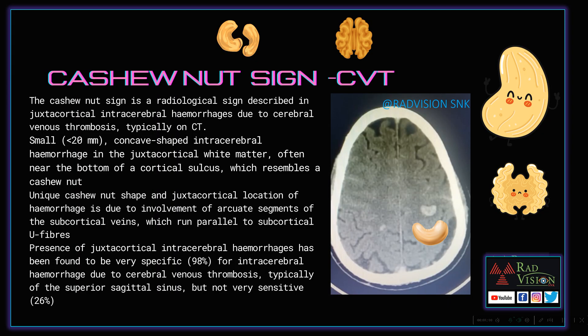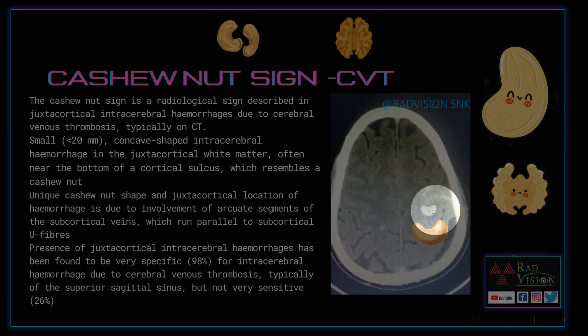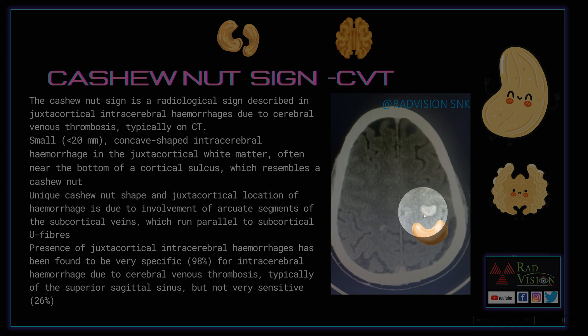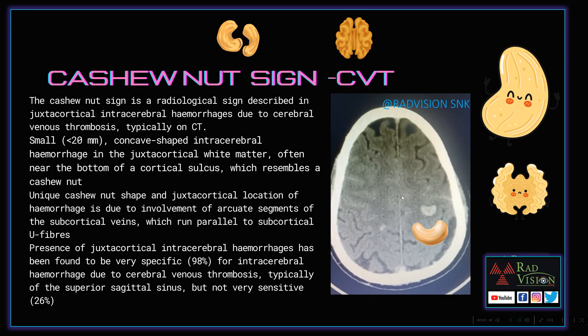Next case. Here you can see there is a small concave-shaped hemorrhage noted in the juxtacortical white matter, less than 20 mm in size. This typically mimics a cashew nut. Suspect cerebral venous thrombosis. These cashew nut shapes are typically due to involvement of arcuate segments of the subcortical veins which run parallel to the subcortical U-fibers.